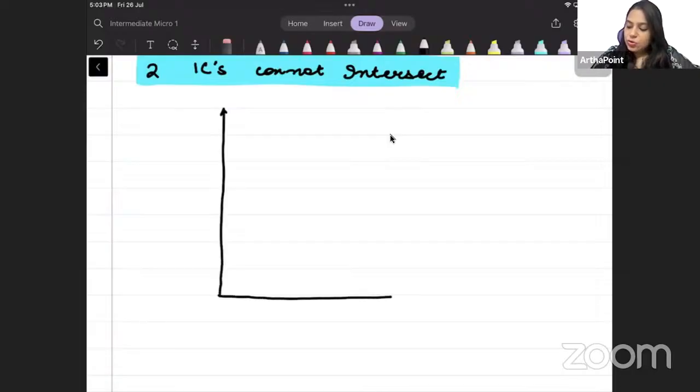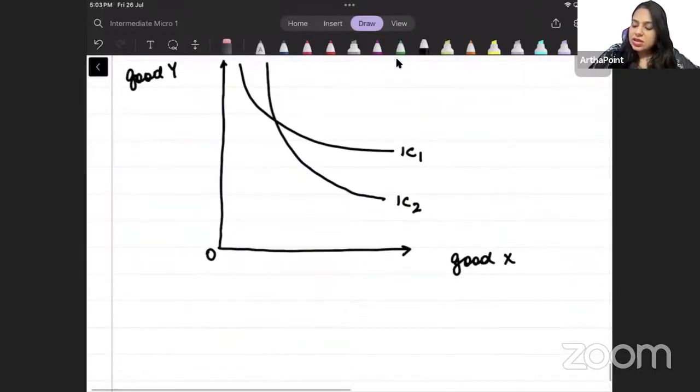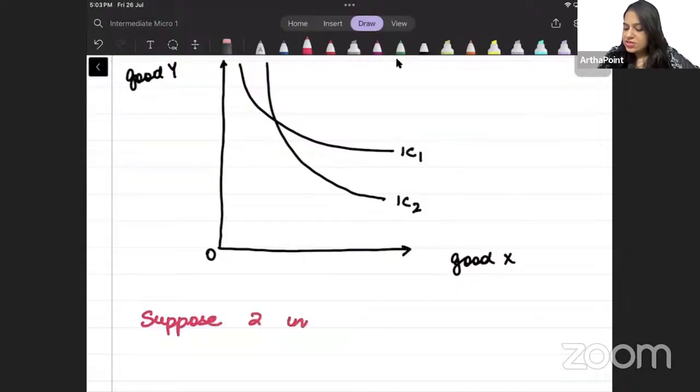I am going to start by assuming that suppose two indifference curves intersect. Suppose the two indifference curves intersect. So what will happen? Indifference curve one, indifference curve two, good X, good Y. So I am saying suppose two indifference curves intersect.